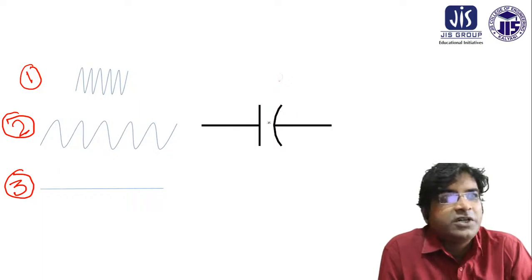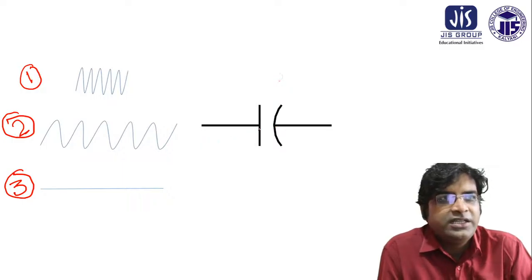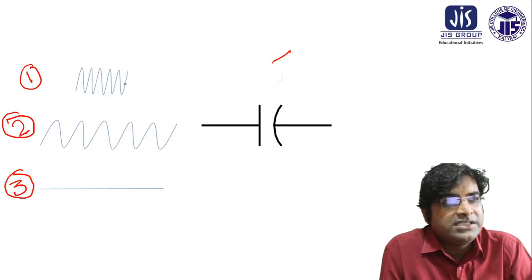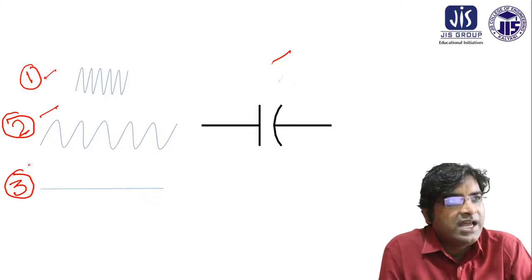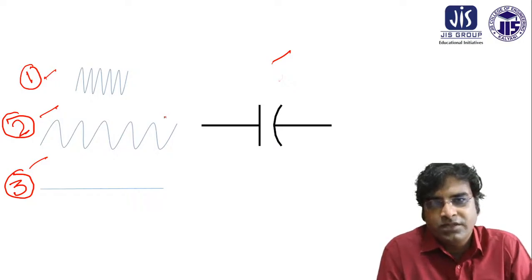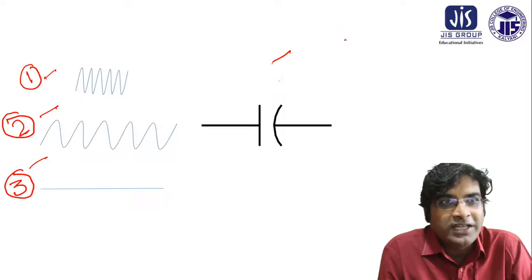Now I am asking you this question: the probability of passing of these three signals — which one is higher for this particular capacitor? How does it relate to reactance? I am coming to that. There is a capacitance, and I am introducing three signals: the first one, the second one, and the third one. Which signal has the highest probability of passing through this capacitance?